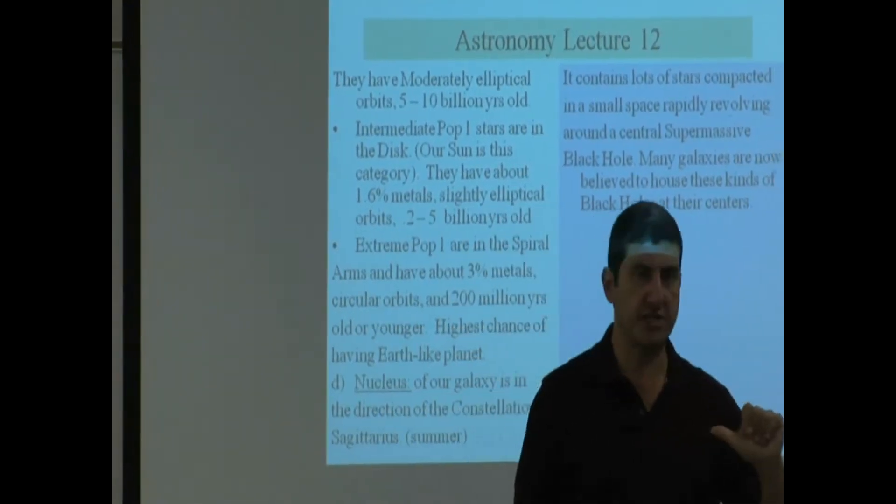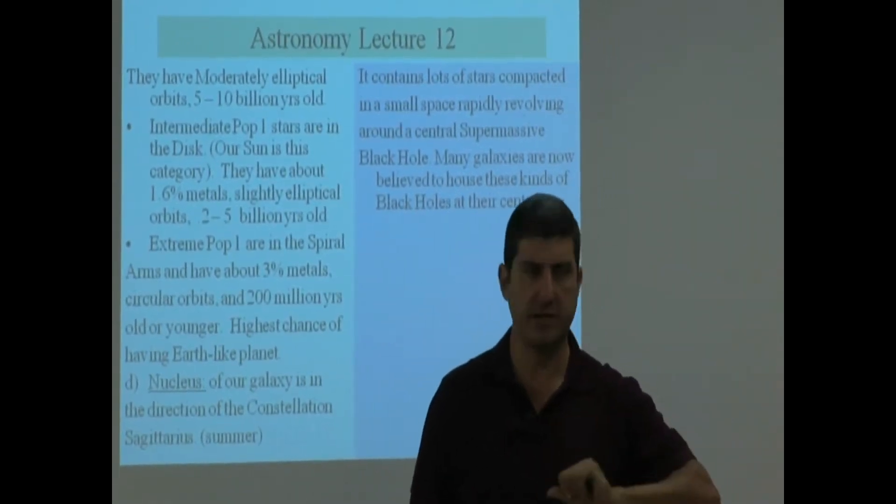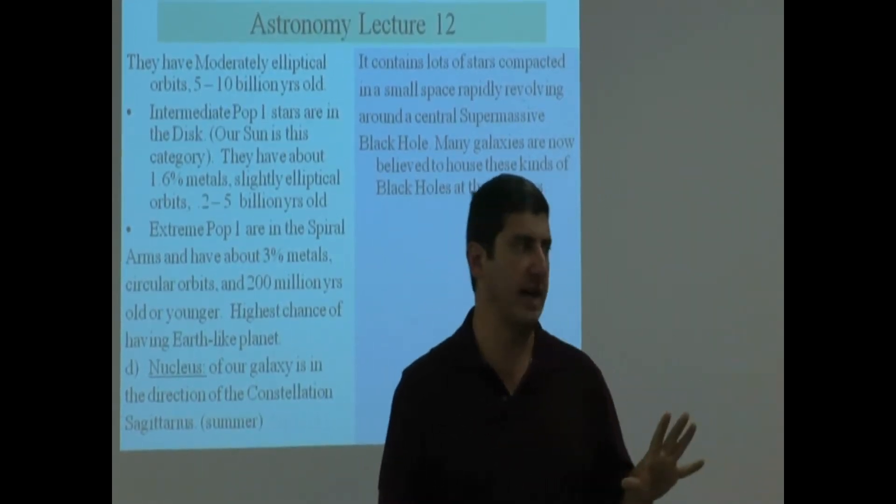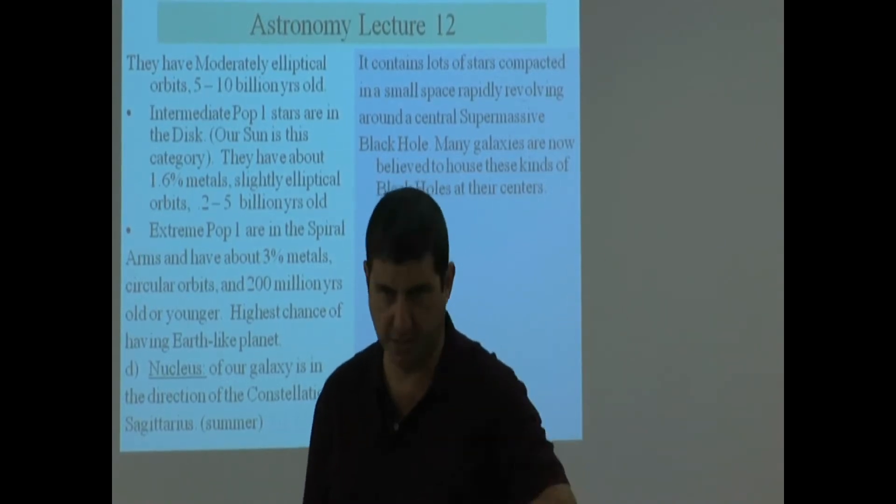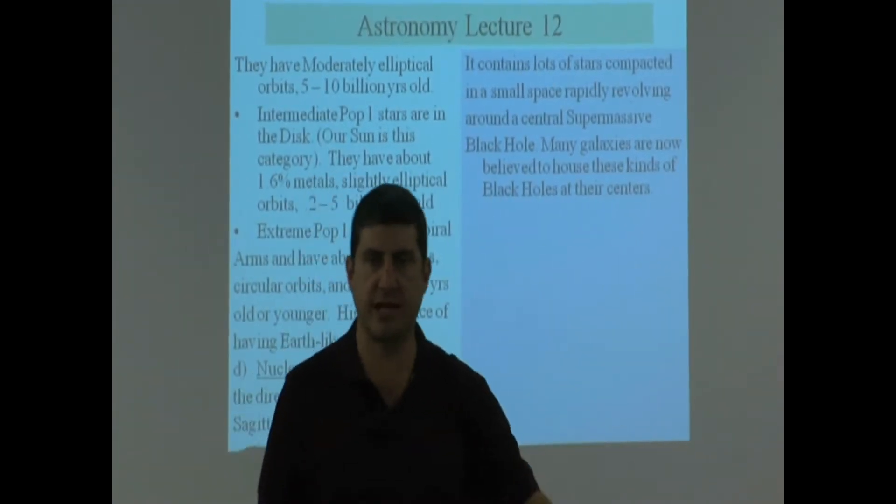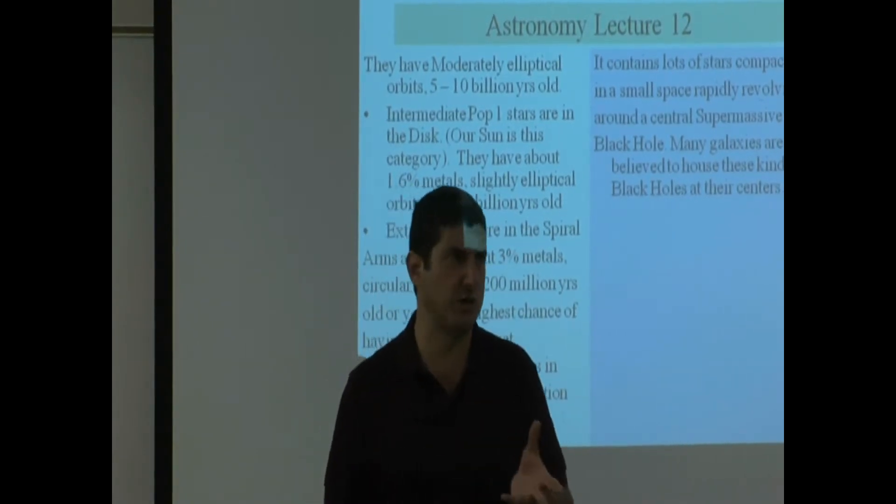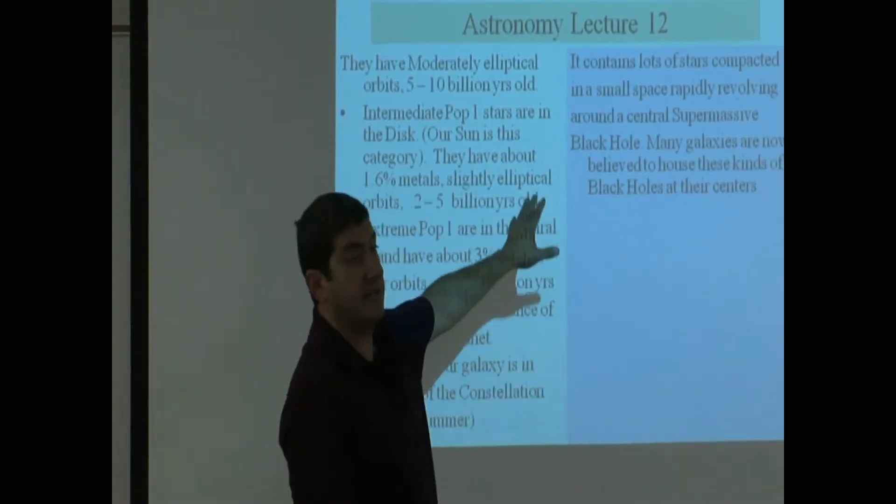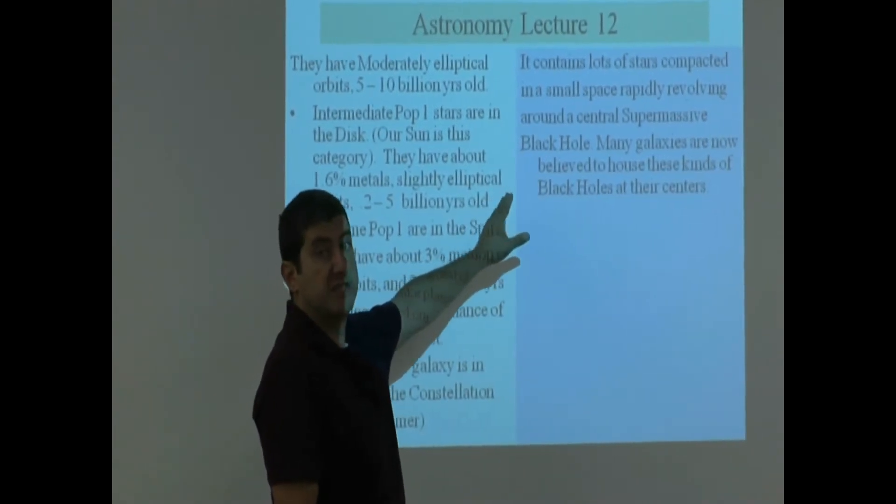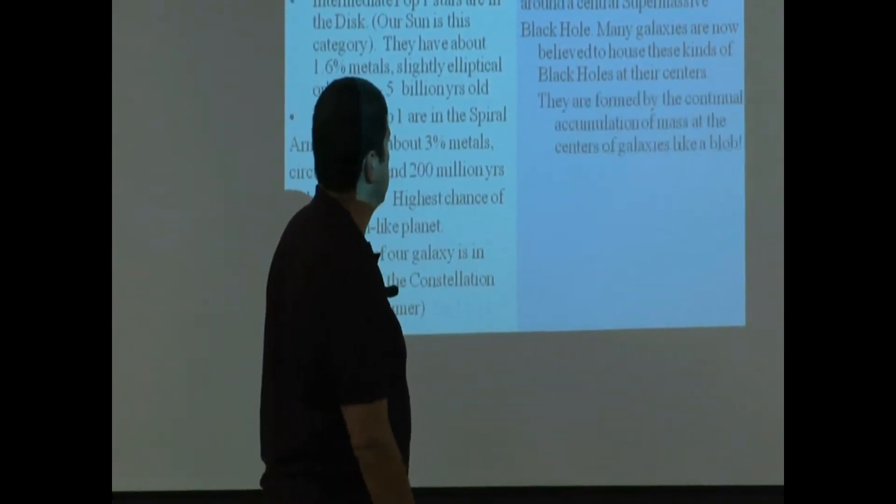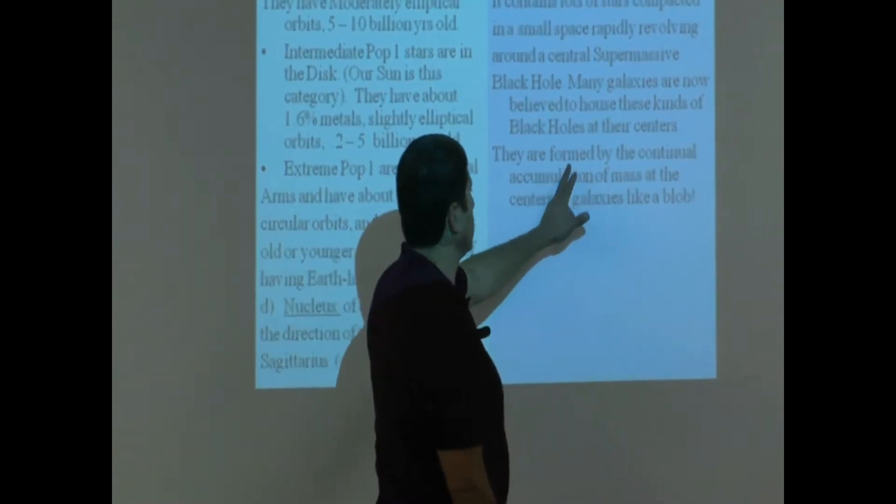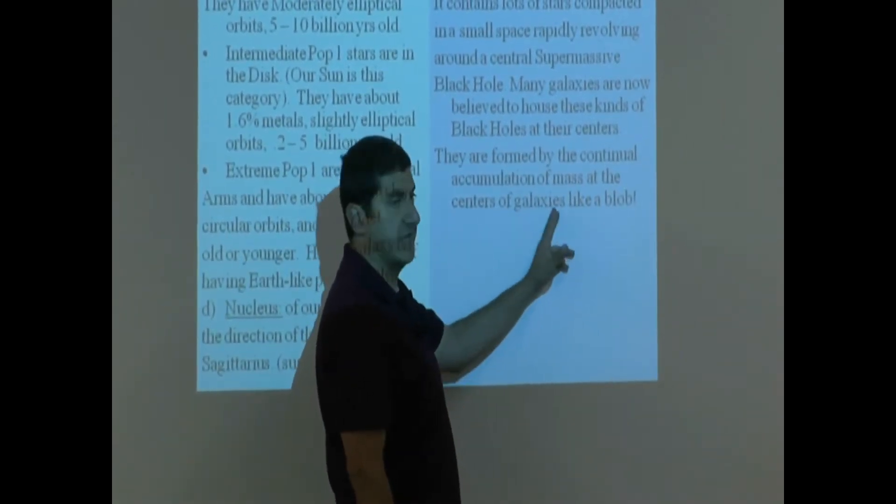The other black holes that we studied, I think it was Monday, those are called regular black holes. When a star dies, it ends up as a black hole. Those guys have masses of roughly 10 to 20 solar masses. These guys have masses hundreds of millions of times the mass of the sun.